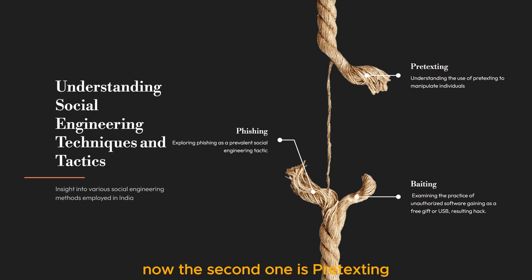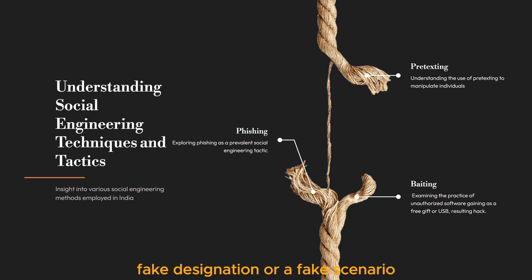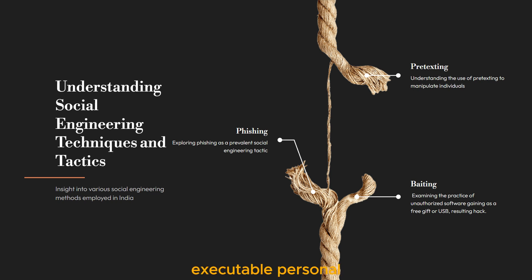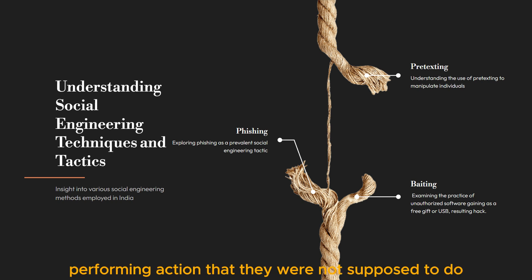The second technique is pretexting. In pretexting, a person manipulates another person by giving them a fake designation or creating a fake scenario. For example, a person imposes themselves as a trusted authority figure like a company executive — which they are not — so that the other person is led into divulging information or performing actions they were not supposed to do.